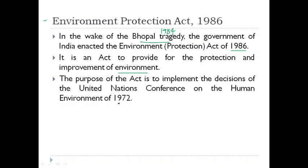The purpose of the act is to implement the decisions of the United Nations Conference on Human Environment of 1972. This conference was of particular importance because it was the first time that the protection of the environment was recognized internationally. From the Industrial Revolution onwards, from the 18th and 19th centuries, the destruction of the environment for industrial and development purposes was exponentially increasing.